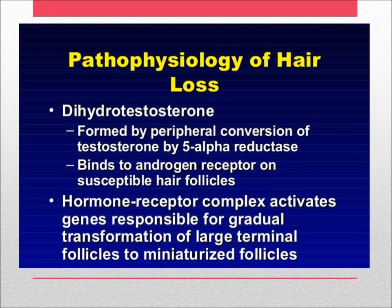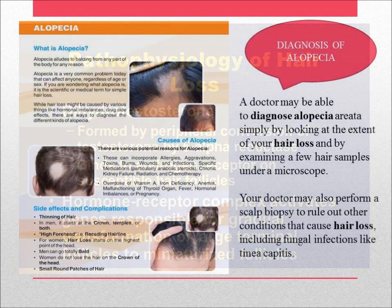Pathophysiology of hair loss: dihydrotestosterone, formed by peripheral conversion of testosterone by 5-alpha reductase, binds to androgen receptors on susceptible hair follicles. The hormone-receptor complex then activates genes responsible for the gradual transformation of large terminal follicles to miniaturized follicles.